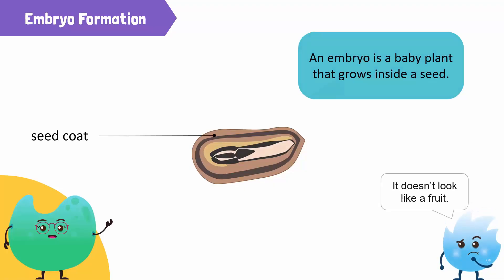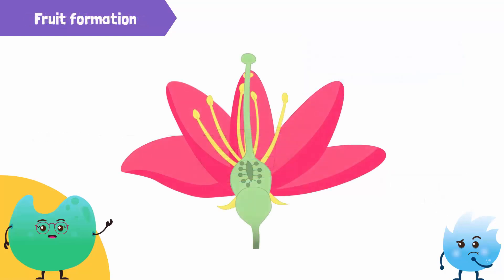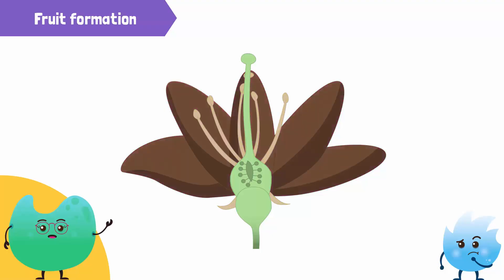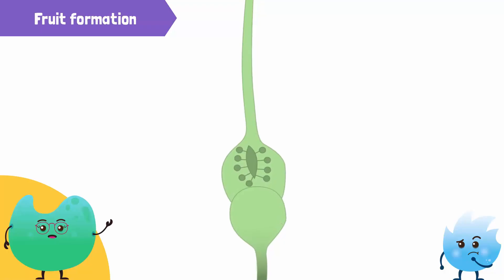Hmm, but it does not look like a fruit at all. You're right, Spikey. After fertilization, several changes take place in a flower. For instance, the flower's sepals, petals, and stamens dry up and fall off. Then, the ovules, which contain the embryo, develop into a seed.